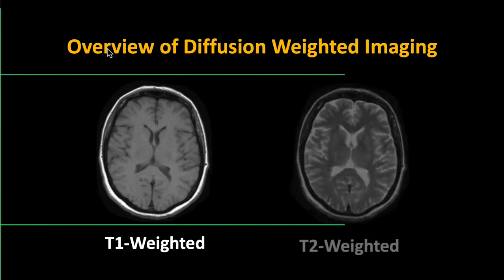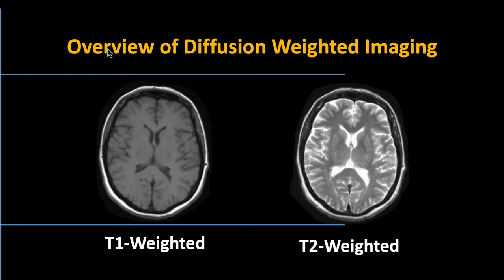Diffusion weighted imaging — a brief overview. We're all familiar with T1 weighted and T2 weighted scans. T1 and T2 weighting refer to intrinsic properties of different tissue types and the relaxation of hydrogen atoms within those tissues. With both T1 and T2 weighted imaging, we try to hit a sweet spot in which the difference in intensity between different tissues — white matter, gray matter, and CSF — is the greatest. We also use T2 weighted scans to acquire BOLD images, since T2 weighted is more sensitive to changes in blood oxygenation.